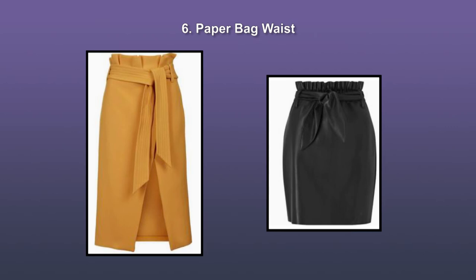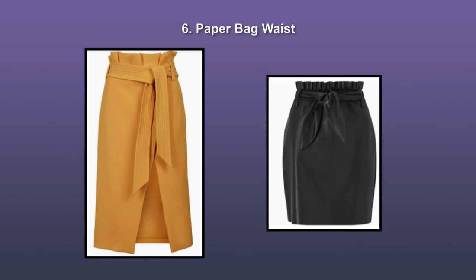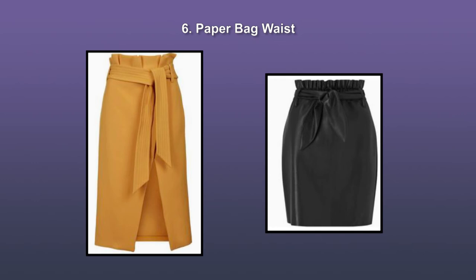Paper bag waist. Paper bag waist pants are pants that have a scrunchy waist that reminds one of a paper bag. They usually scrunch at the waist and are tied together with a ribbon belt. They are chic and elegant. What we see here is an image of an elegant burnt yellow paper bag waist skirt from Topshop. On the right is another fitted skirt made out of polyurethane with paper bag waistline, from Miss Selfridge.